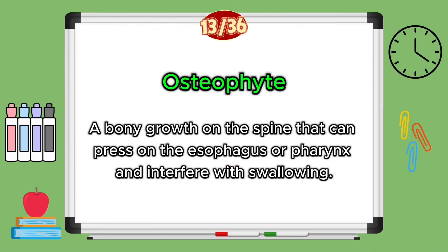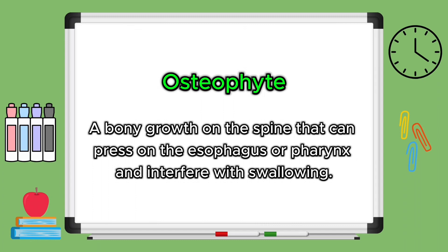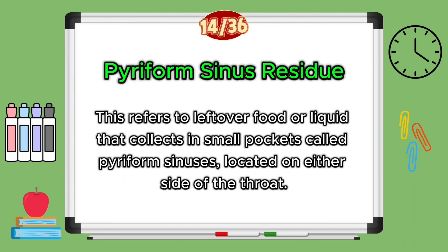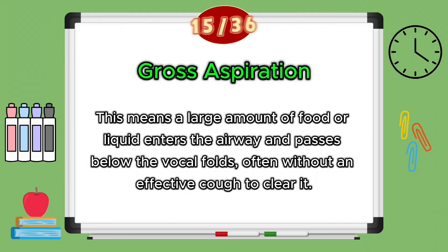An osteophyte is a bony growth on the spine that can press on the esophagus or pharynx — your throat area — and interfere with swallowing. Piriform sinus residue refers to leftover food or liquid that collects in small pockets called piriform sinuses, which can be located on either side of your throat.